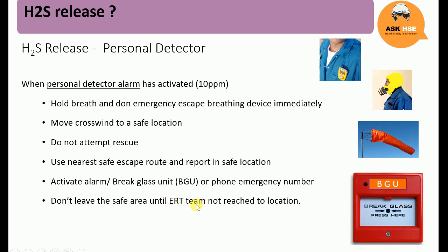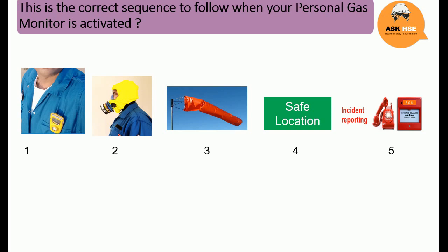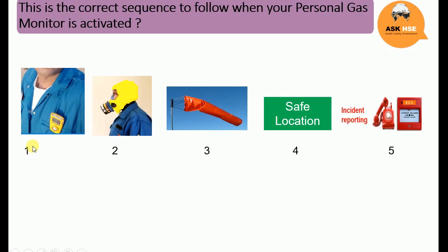Here you can see the correct sequence to follow when your personal gas monitor is activated. There are five images: first, your monitor is activated; second, immediately use the escape hood; third, check wind direction using the wind sock; fourth, go to a safe location; and fifth, report the incident through the break glass unit or call the emergency contact number.